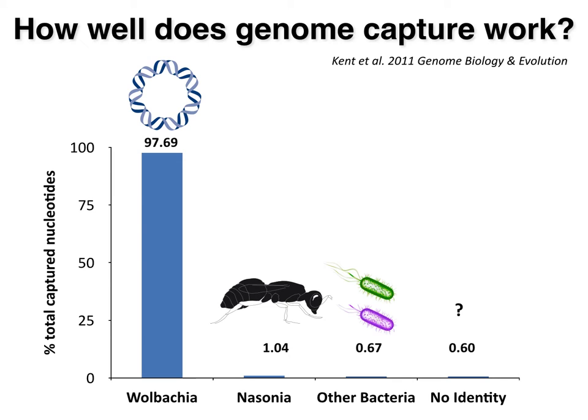Prior to us doing this, targeted sequence capture had largely been used for re-sequencing of single genomes — it hadn't been applied to heterogeneous DNAs in environments like these wasps with Wolbachia and all their gut microbiota. How well does targeted genome capture work for these complex systems? It works very well. 98% of the nucleotides captured were annotated to Wolbachia. There's a little bit of Nasonia DNA and other bacterial DNA. The Nasonia DNA turns out to be Wolbachia gene or genome inserts that jumped from Wolbachia to the host insect genome. The array is really good at capturing genomic inserts from Wolbachia to eukaryotic genomes.